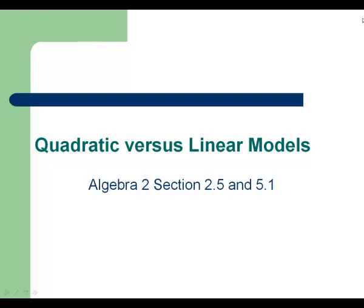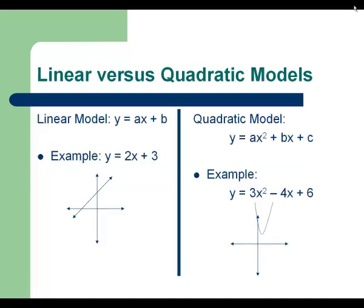Today we're going to be looking at quadratic versus linear models. This is section 2.5 and 5.1 in the Algebra 2 book. 2.5 goes with the linear models, 5.1 goes with the quadratic models.